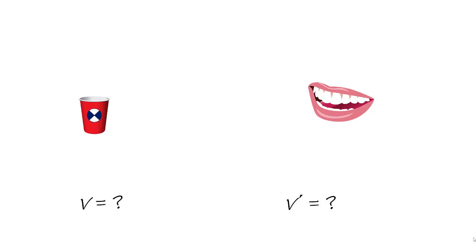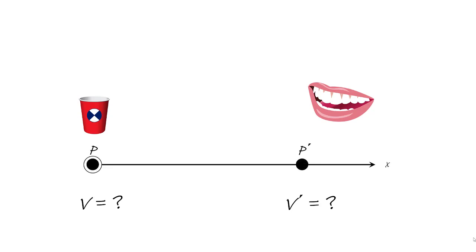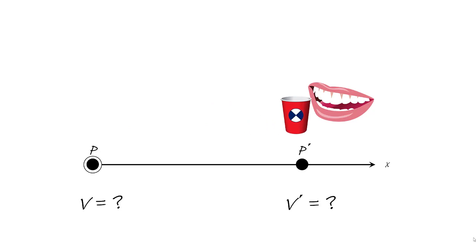The initial velocity is going to be zero. Then we're going to have the cup move over to the mouth. When the cup gets to the mouth, what's its final velocity going to be? And unless you're going to have some pretty expensive dental work, the velocity also has to be zero. So we're going to move from our initial position p to our final position p prime, starting and ending with zero velocity.